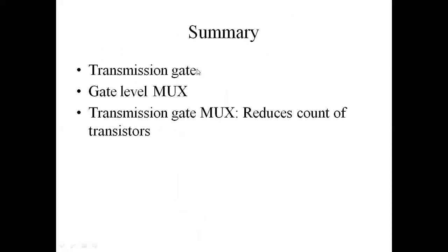In conclusion: the transmission gate transmits both logic 0 and logic 1 as strong signals because both transistors are conducting simultaneously — NMOS carries good zero and PMOS carries good one — so both logic levels at the output are strong. Additionally, since PMOS and NMOS are connected in parallel, the effective resistance is less, giving less voltage drop and contributing to the strong output. The transmission gate MUX implementation reduces transistor count significantly, giving less area and less space utilization compared to the gate-level MUX implementation.